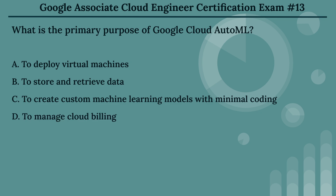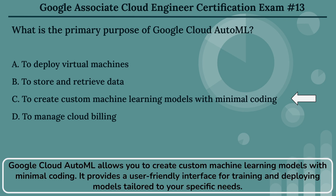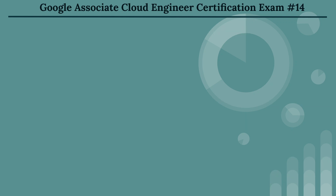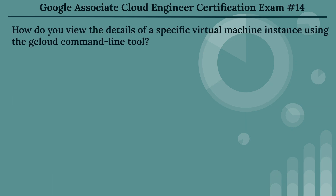The right answer is Option C: to create custom machine learning models with minimal coding. Google Cloud AutoML allows you to create custom machine learning models with minimal coding. It provides a user-friendly interface for training and deploying models tailored to your specific needs.